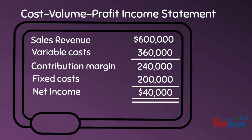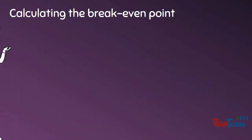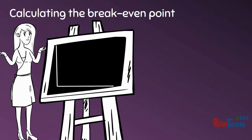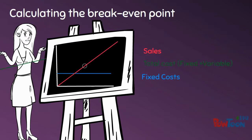Breakeven Analysis asks the question: what does our sales need to be in order for our net income to be zero? When we calculate the breakeven point, we have to remember that within the relevant range, our fixed costs remain constant, but as our sales increase, our variable costs also increase.